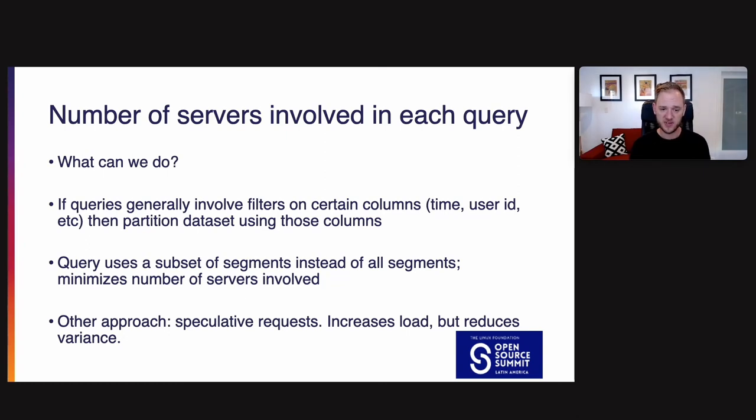Another approach you can do here is speculative requests. The idea here is that you send the same request to two servers and whichever one returns first, you use that one and then cancel the other one. The idea is that if you have one slow server and one fast server and you don't know which one is which, you send it to both and you take the fast one. This increases total load in the cluster because you're essentially doubling the number of requests being made, but it does reduce variance. We actually have not implemented this technique in Druid, although it is a technique that is used in other distributed systems.